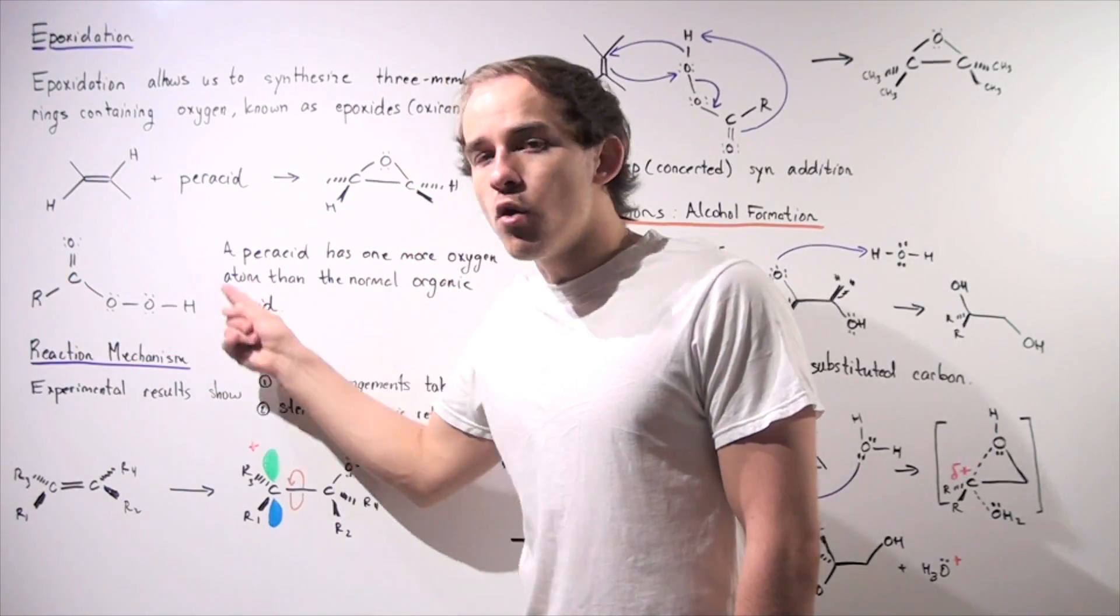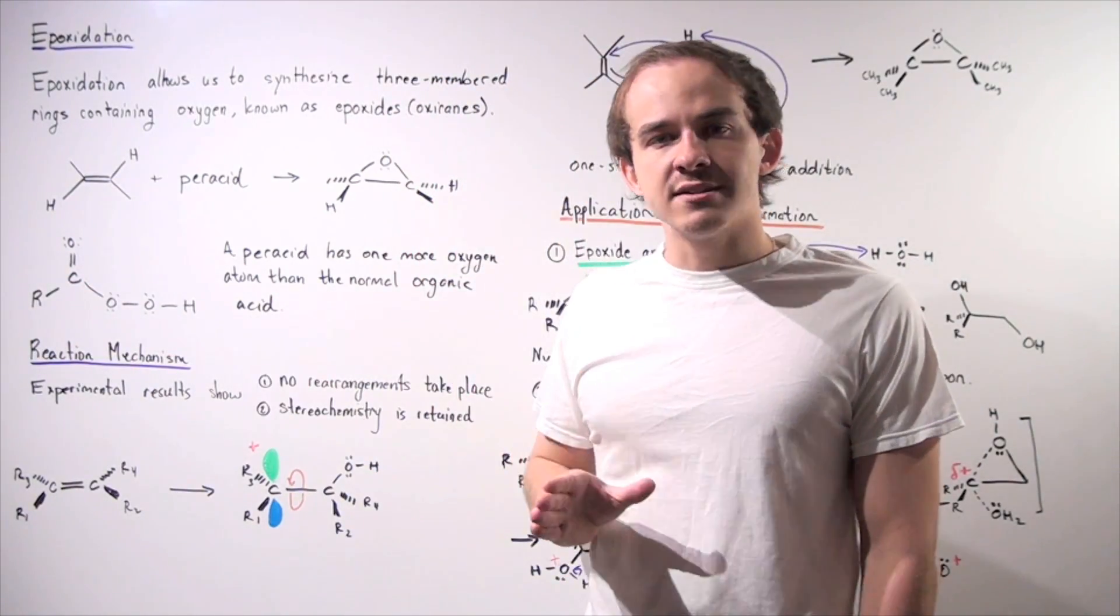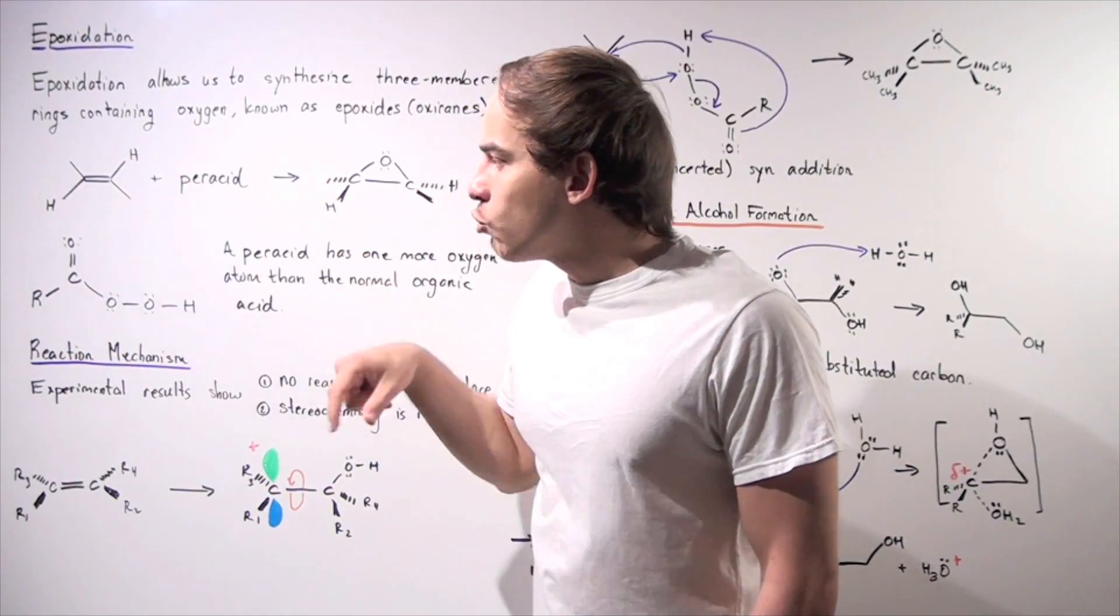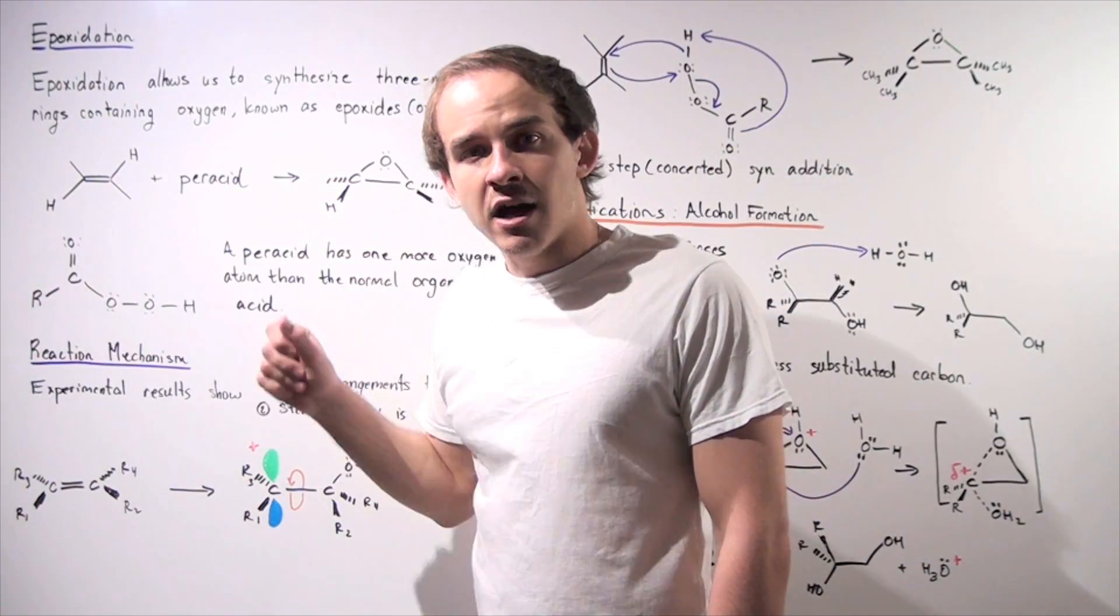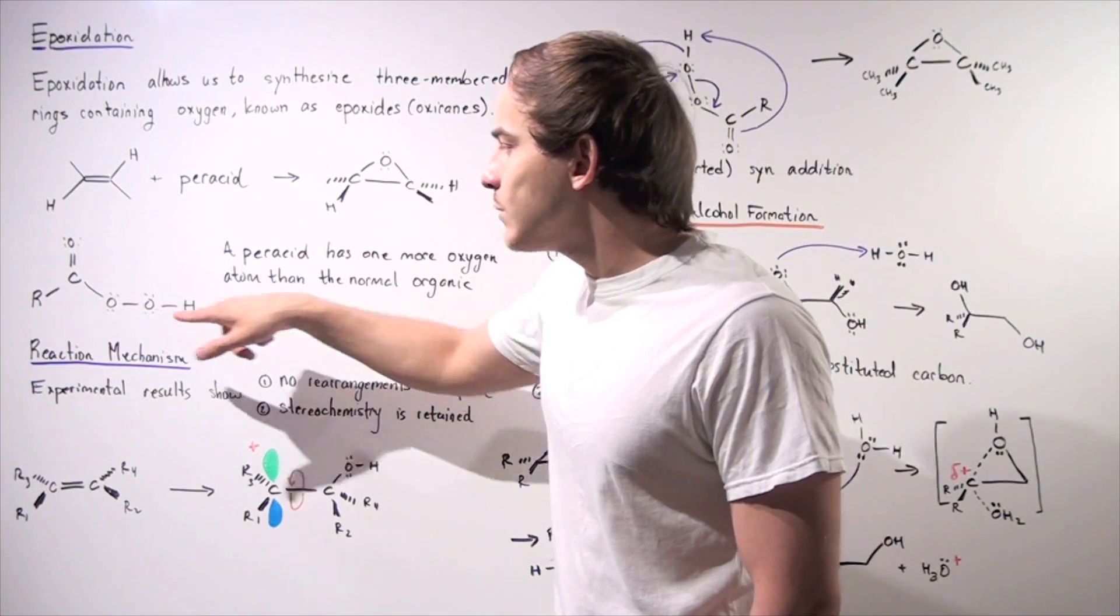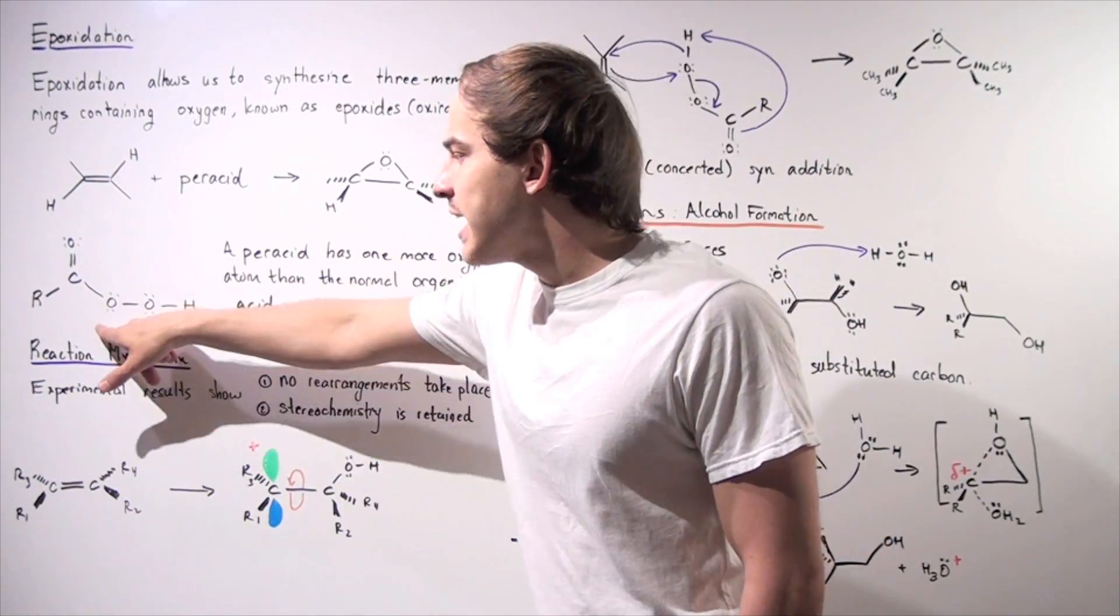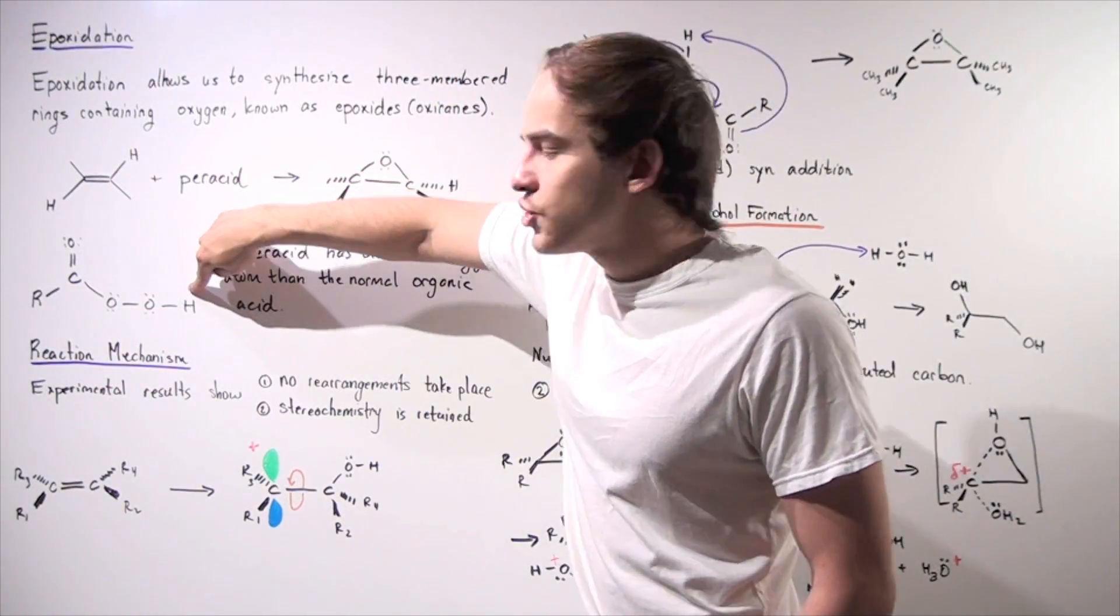So this is our general formula of our peracid. We have the carbonyl group, the carbon double bonded to the oxygen. On one side, we have the alkyl hydrocarbon. On the other side, we have two oxygens attached in a row and attached to the H.